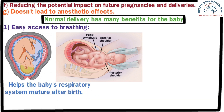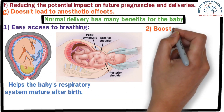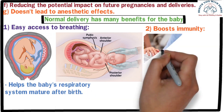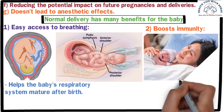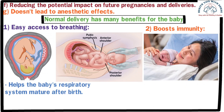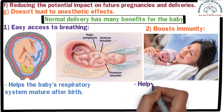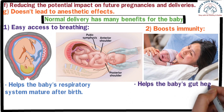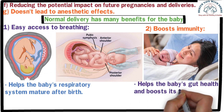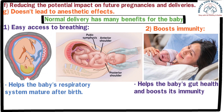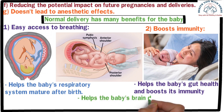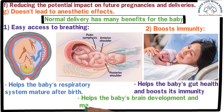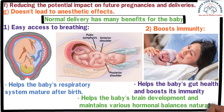This helps the baby's respiratory system mature after birth. Number two: boost immunity — during normal delivery the baby comes into contact with some beneficial bacteria from the mother's body, which helps the baby's gut health and boosts immunity against disease. Number three: facilitated brain development — a normal delivery also assists in the baby's brain development and maintains various hormonal balances naturally.